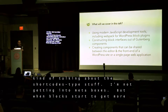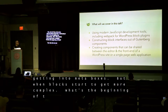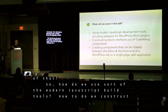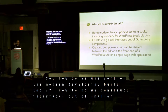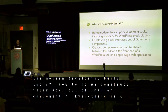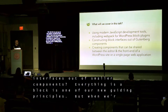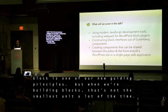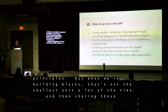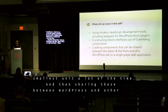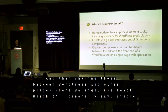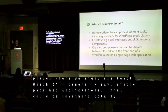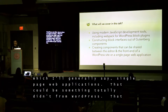How do we use modern JavaScript build tools? How do we construct interfaces out of smaller components? Everything as a block is one of our new guiding principles, but when we're building blocks, that's not the smallest unit a lot of the time. And then sharing those components between WordPress and other places where we might use React — which I'll generally call single page web applications — that could be something totally different from WordPress, or a small section of your site that has a little dynamic JavaScript in it.